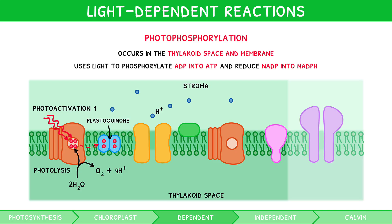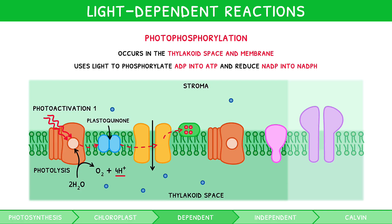Next, the plastoquinone from photoactivation 1 are oxidised, each releasing two electrons to a proton pump in the electron transport chain. Each electron provides energy to pump 1 H+ from the stroma to the thylakoid space, so 4 H+ are pumped in total. Unlike oxidative phosphorylation, only one proton pump is utilised in photophosphorylation. However, it is worth noting that the H+ from photolysis also contributes to the concentration gradient. Once used, the electrons are accepted by another electron acceptor known as plastocyanin, reducing it.